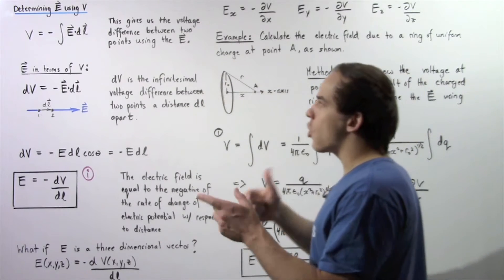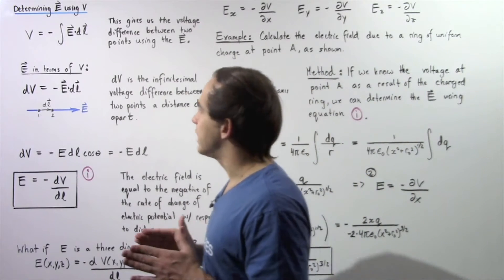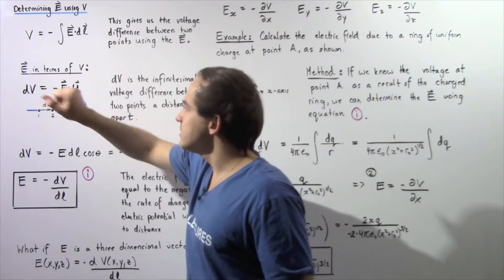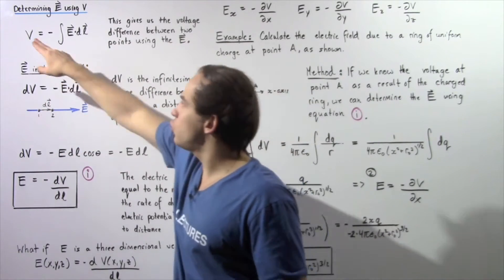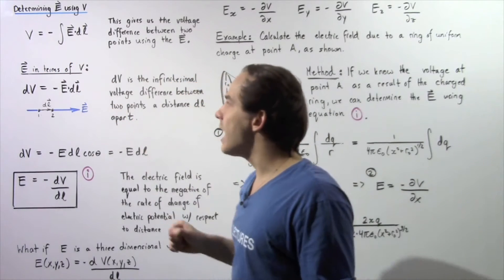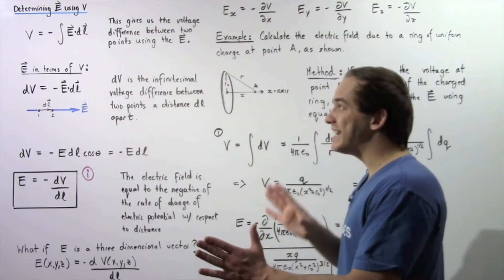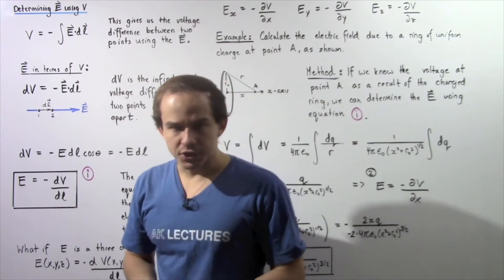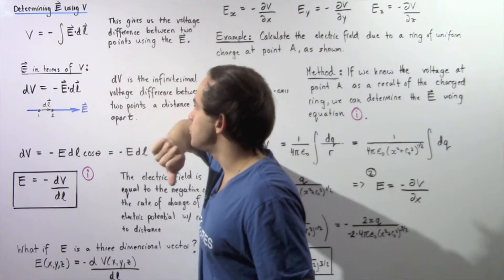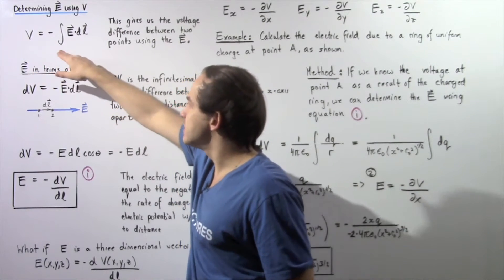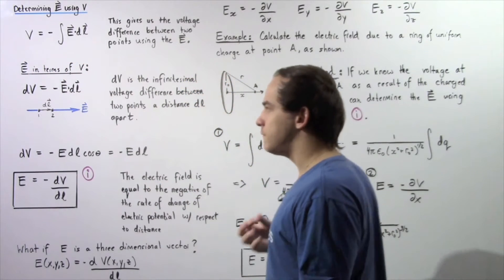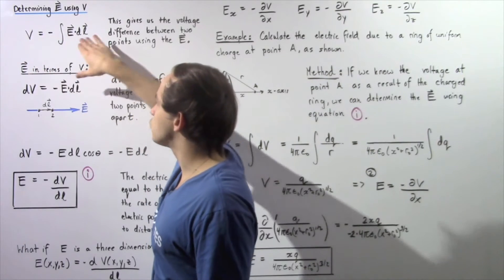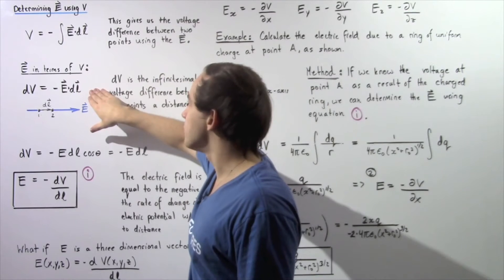Now, can we reverse the argument? Can we calculate what the electric field is as a result of our voltage? In this lecture, we essentially want to use this equation and solve for an equation that gives us the electric field in terms of our voltage. We start with this equation and want to express it in its differential form, so we take the derivative of the left and right side.